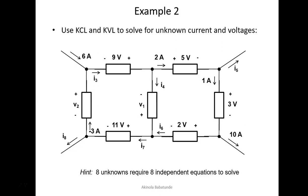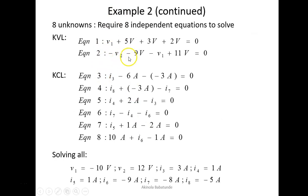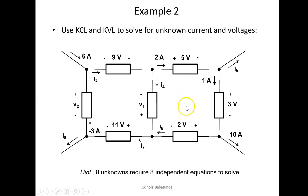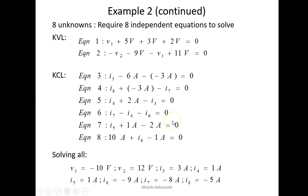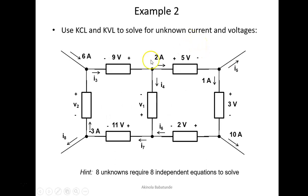Going ahead to find those equations: around the first closed part using KVL, we have minus V2 minus 9 minus V1 plus 11 equals zero. That is exactly what we have here: minus V2 minus 9 minus V1 plus 11 equals zero. For the second closed path, we get plus V1 plus 5 plus 3 plus 2 equals zero. So for the two closed paths, we have found the two voltage equations that we need.